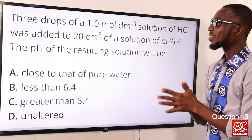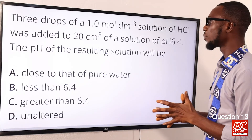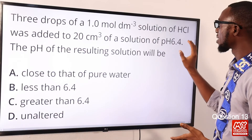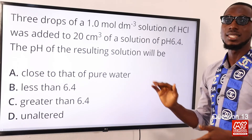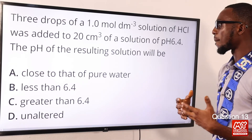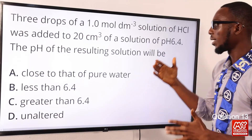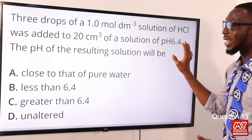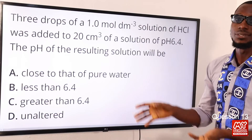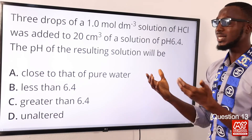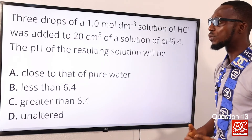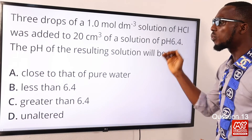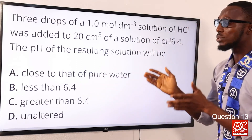Question thirteen: three drops of 1.0 mol/dm³ solution of HCl was added to 20 cm³ of a solution of pH 6.4. The pH of the resulting solution will be what? The pH of 6.4 tells us the solution is acidic. When we add more acid to it, it becomes more concentrated, so the pH value will reduce — moving towards being more acidic. The pH of the resulting solution will be less than 6.4. The correct option is option B.